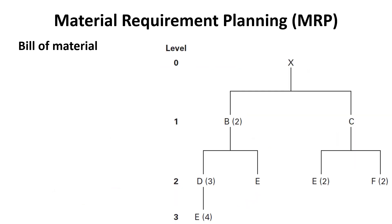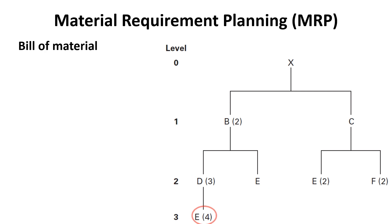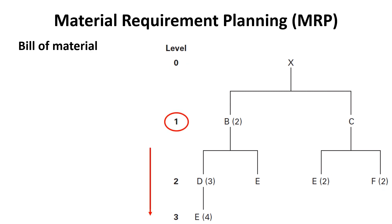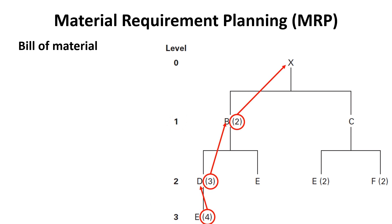Consider the shown product structure tree. The end item X is composed of two B's and one C. Each B requires three D's and one E, and each D requires four E's. Similarly, each C is made up of two E's and two F's. These requirements are listed by level, beginning with zero for the end item, then one for the next level, and so on. The items at each level are components of the next level up and, as in a family tree, are parents of their respective components. The number in parentheses represents the quantities of each item in the product structure tree, referring only to the amounts needed to complete one assembly at the previous level.